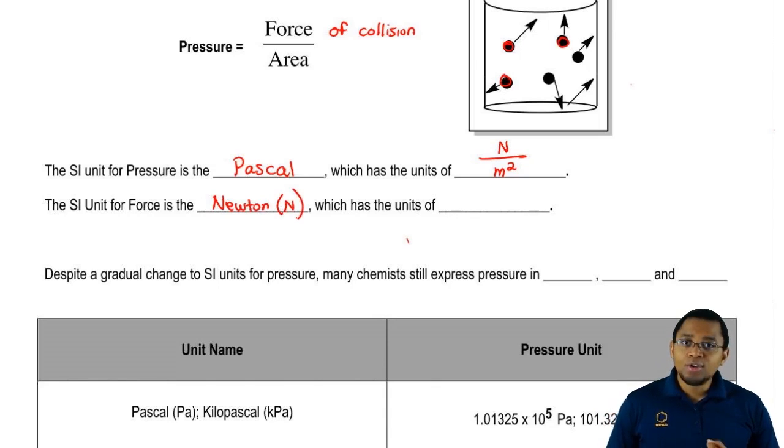We're going to say the units for the Newton are kilograms times meters over seconds squared. Just remember those two SI units. That can easily be a theory question that your professor asks you.